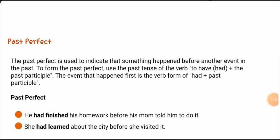The past perfect tense is used to indicate that something happened before another event in the past. To form the past perfect, we use 'had' plus the past participle — not 'has' or 'have' as in the present perfect tense. We use has or have in the present perfect tense, but we use 'had' in the past perfect tense.